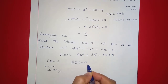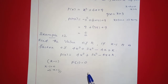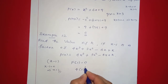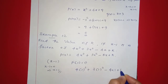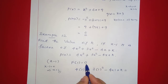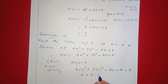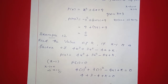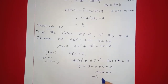We compute P of 1 and set it equal to 0. So: 4 times 1 cubed plus 3 times 1 squared minus 4 times 1 plus k equals 0. That gives 4 plus 3 minus 4 plus k equals 0, which simplifies to 3 plus k equals 0. Therefore k equals negative 3.